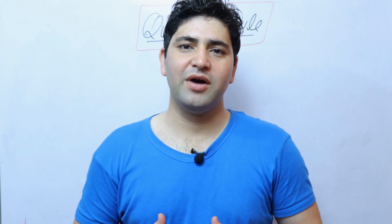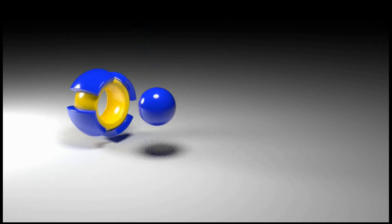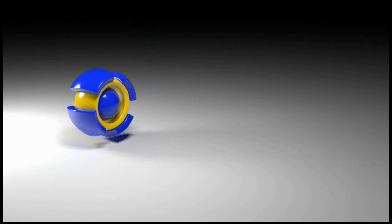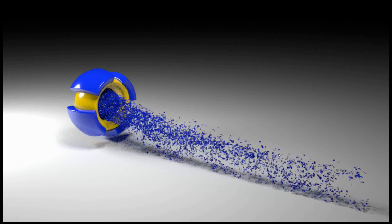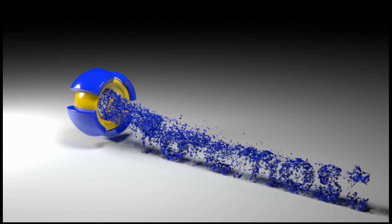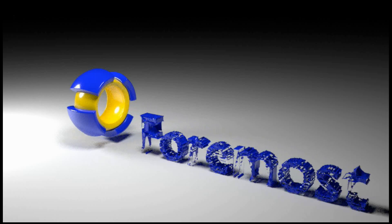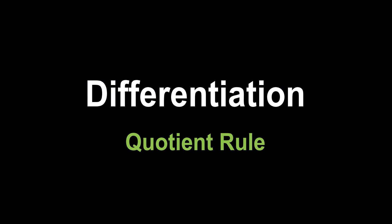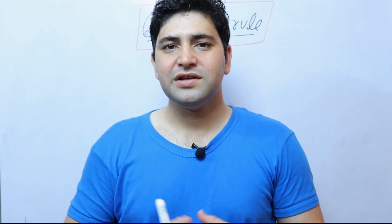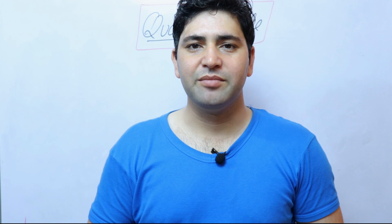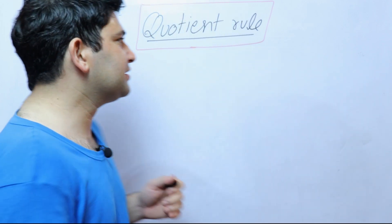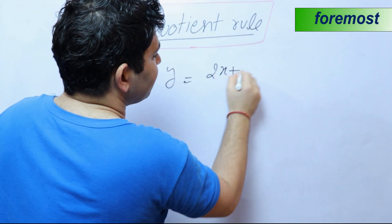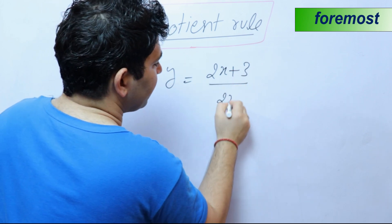In this video, we are going to learn about the quotient rule of differentiation. To understand the quotient rule of differentiation, let us take an example of a function y is equal to 2x plus 3, whole divided by 2x squared.